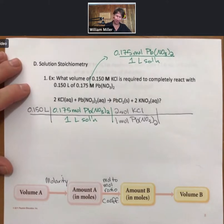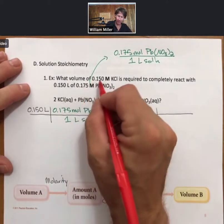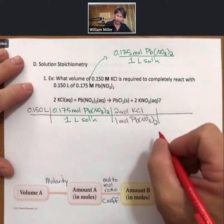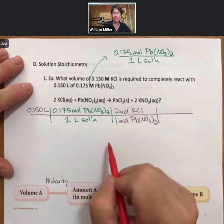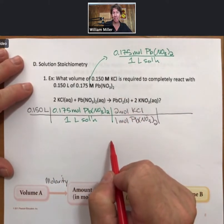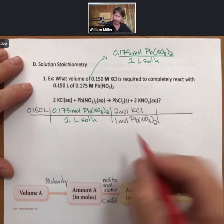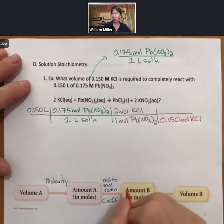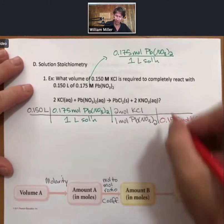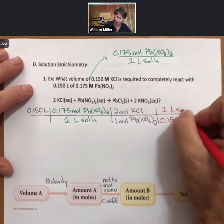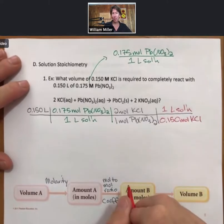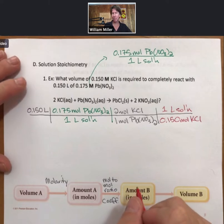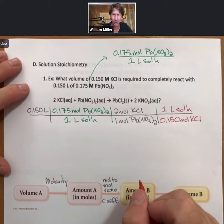And I'll do something similar here for my 0.150 molar potassium chloride. I see that my moles of potassium chloride are on the top, so this time my molarity will be 0.150 moles of potassium chloride per one liter of solution. And so my molarity is upside down to get my units to cancel out. But it's still molarity and my units still cancel beautifully.